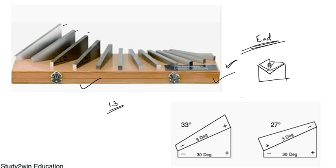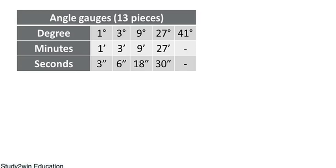Suppose we have a component with an angle of 33 degrees. We have a 13-piece angle gauge set with various degree, minute, and second angle gauges: 1 degree, 3 degree, 9 degree, 27 degree, 41 degree, 1 minute, 3 minute, 3 second, 6 second angle gauges and so on.